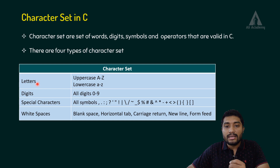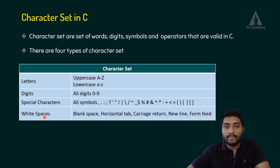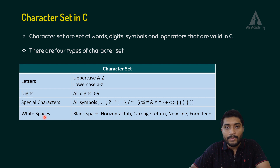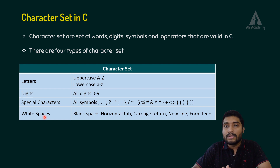So, letters, digits, special characters, white spaces — four types of character sets are there in C programming language. This is the character sets. I hope this video will be helpful for you. Thank you.